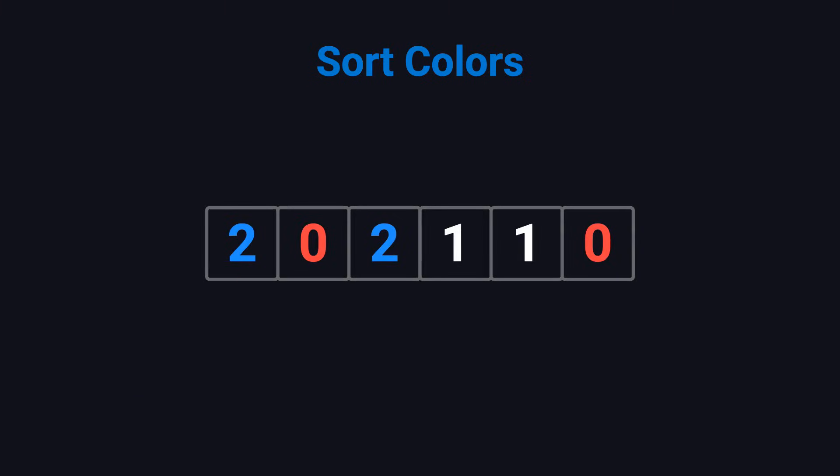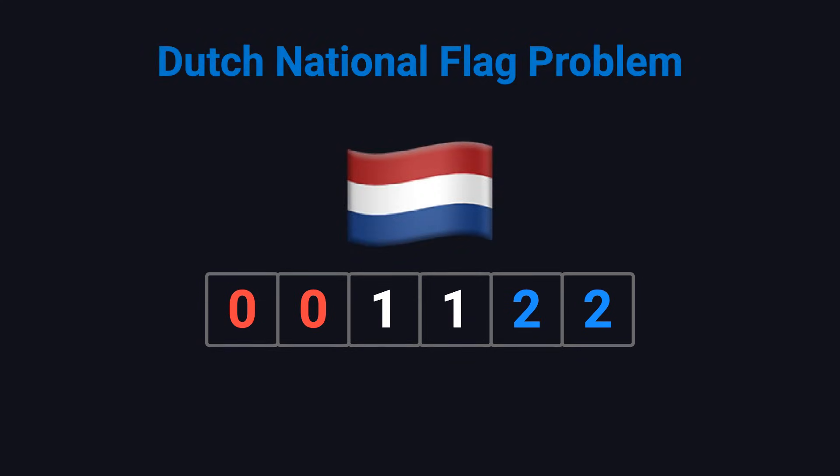Let's look at an example. If the input is 2, 0, 2, 1, 1, 0, the output should be 0, 0, 1, 1, 2, 2. After sorting, red is on the left, white is in the middle, and blue is on the right. That's exactly the order of the Dutch national flag, which is why this problem is also called the Dutch national flag problem.